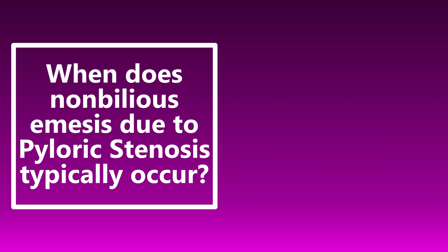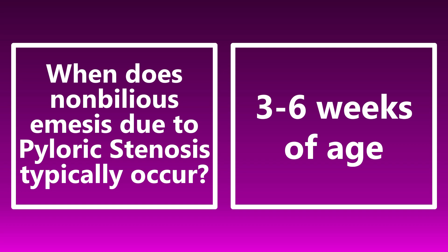Non-bilious emesis due to pyloric stenosis typically occurs at about three to six weeks of age. Some resources say as early as two weeks or as late as eight weeks, and technically it can occur from birth up to six months. The main time frame to worry about pyloric stenosis is three to six weeks of age.